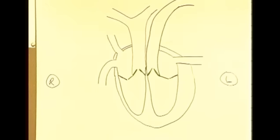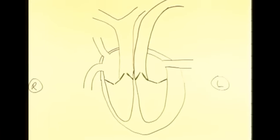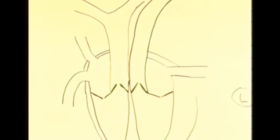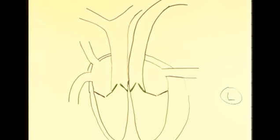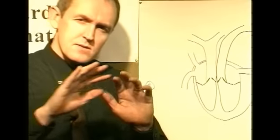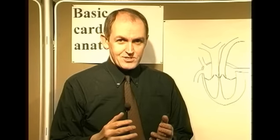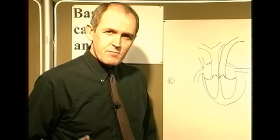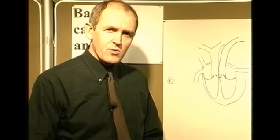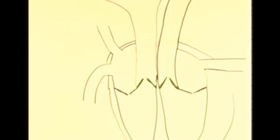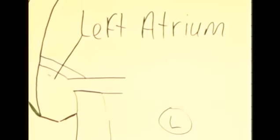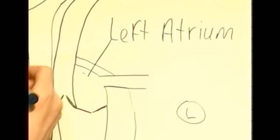Your first aim is to produce a diagram like that, because we're going to work on that in a minute. Now we're going to put some labels on it. Remember that we're trying to draw a three-dimensional structure in two dimensions. Now these top chambers here are the left and the right atrium — so that is the left atrium, and on the other side we have the right atrium.